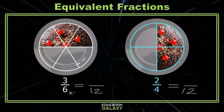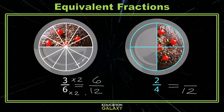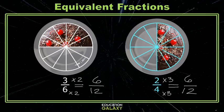So let's multiply top and bottom here, and see that the cake on the left is six-twelfths. On the right, I'm going to need to multiply top and bottom by three, which also gives me six-twelfths. So three-sixths, two-fourths, and six-twelfths are all equivalent fractions.